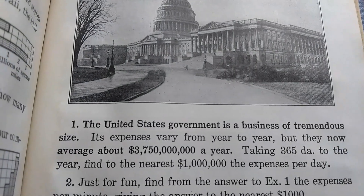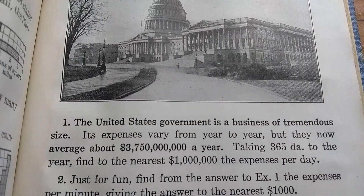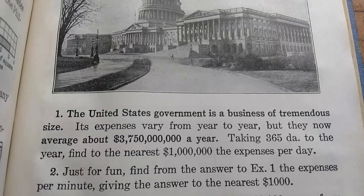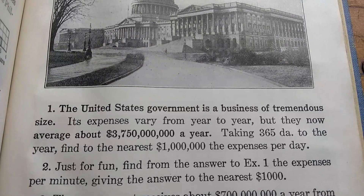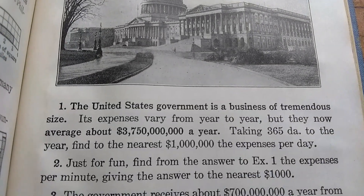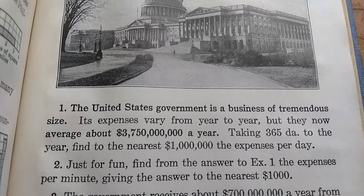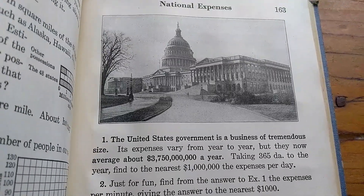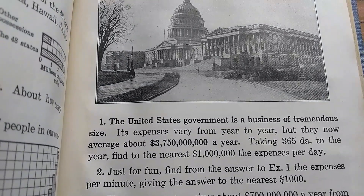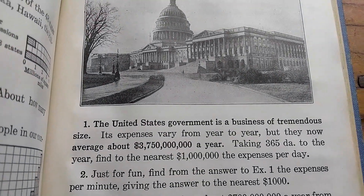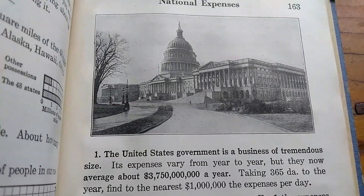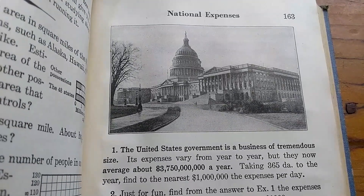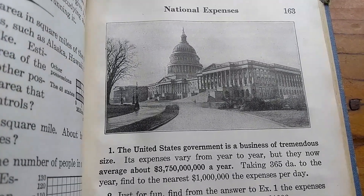Here's a simple question on how much the government spends. 'The United States government is a business of tremendous size. Its expenses vary from year to year, but they now average about $3,750,000,000 a year. Taking 365 days to the year, find to the nearest $1 million the expenses per day.' Really interesting math — when you watch the news and see the government spends billions, how much do they spend per day? Just a practical computation. It really provides an interesting perspective into math and into life.